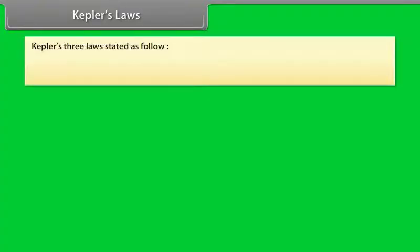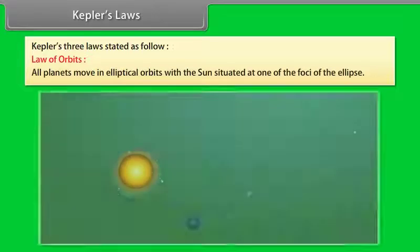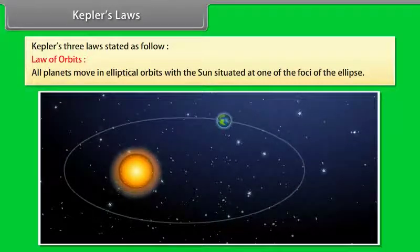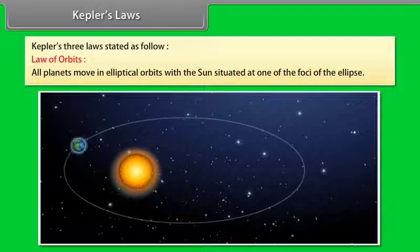Kepler's laws. Kepler gives three laws. Law of orbits: all planets move in elliptical orbits with the sun situated at one of the foci of the ellipse.